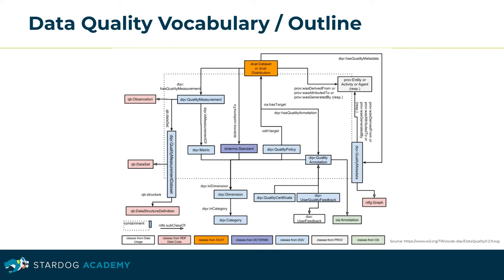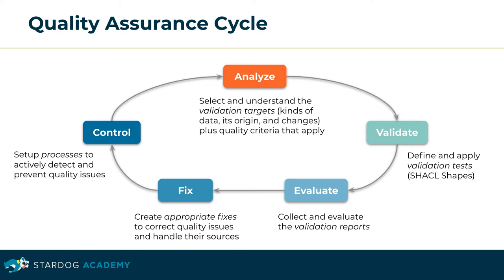This outline relates the classes of the Data Quality Vocabulary to other important standards for data annotation, such as the Data Catalog Vocabulary, the Provenance Ontology, or the Dublin Core Terms vocabulary. A quality assurance cycle covers a broad spectrum of concerns.